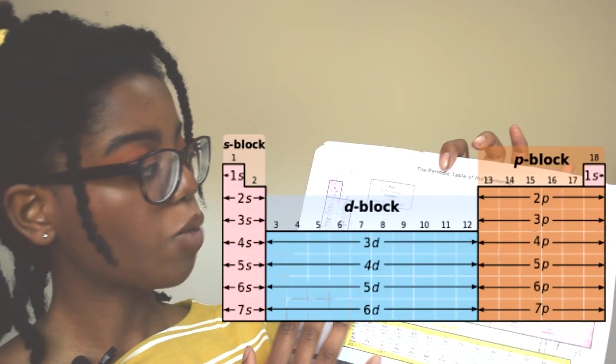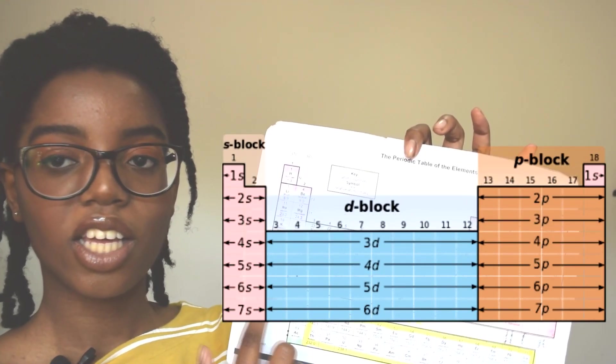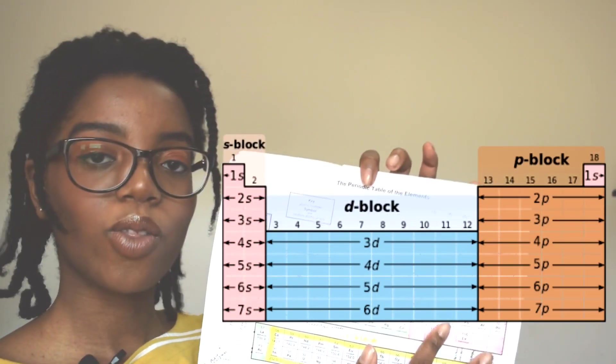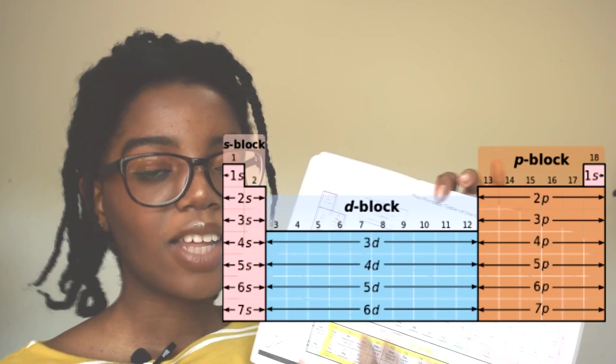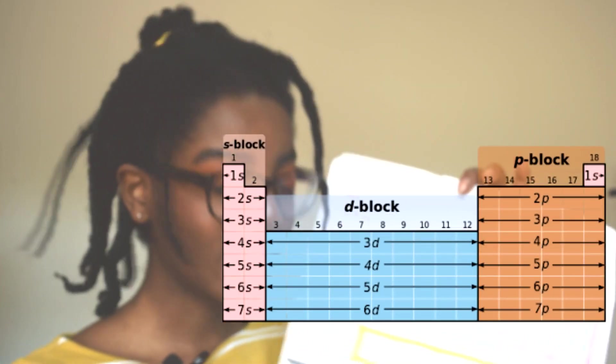Group one to group two is the S block because there's two electrons in the shells. Then the P block is over here with all the non-metals. And really interestingly we have the D block which is all the transition metals, which you'll be learning about in year 13.